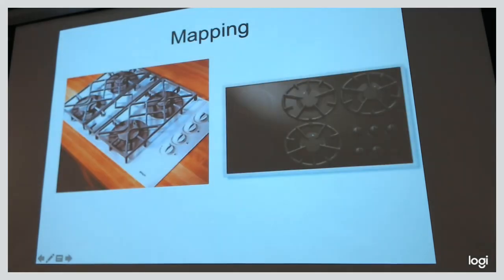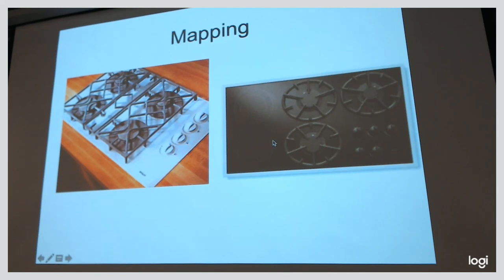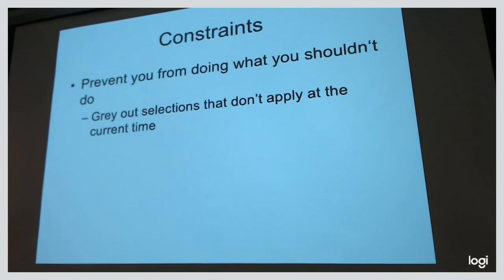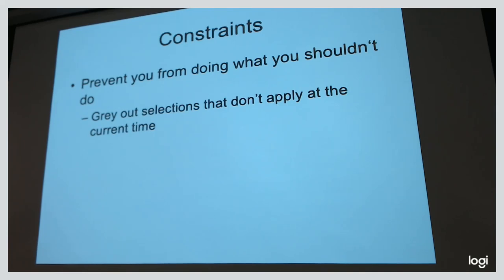Mapping is important. If you have a range top with a set of dials controlling the heat, you have to study carefully to figure out which dial controls which burner — and that's dangerous if you do it wrong. A better solution is a mini-map layout of the burners matching where the dials are. It's also important to have constraints: don't let people click things that don't make sense in context. Gray out options that can't be used. That helps people understand what's allowed and what the current model is.